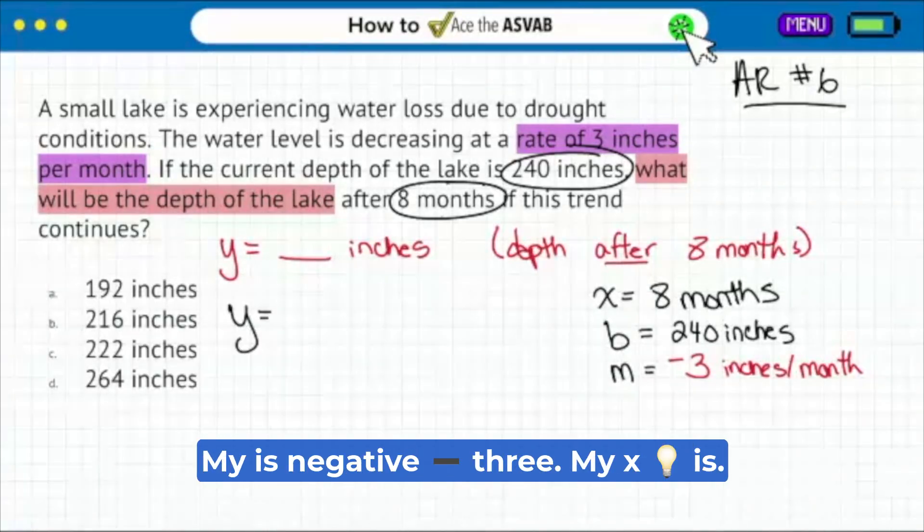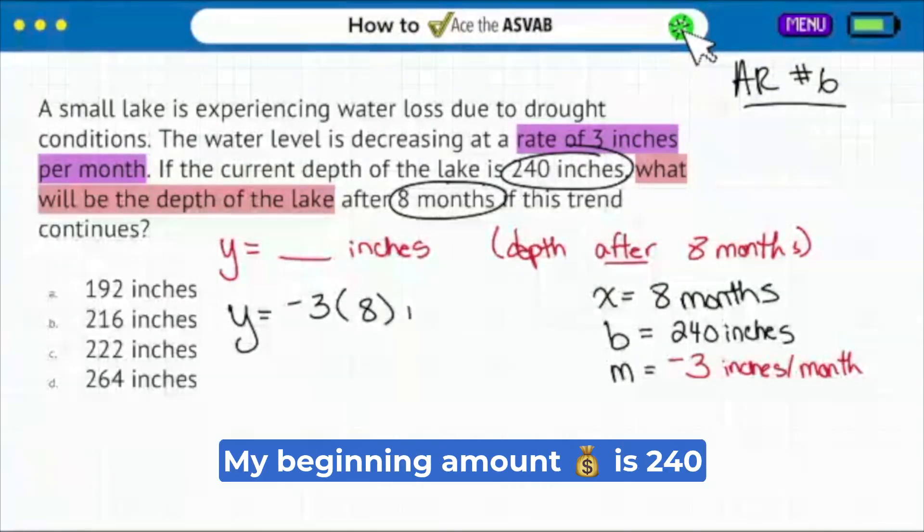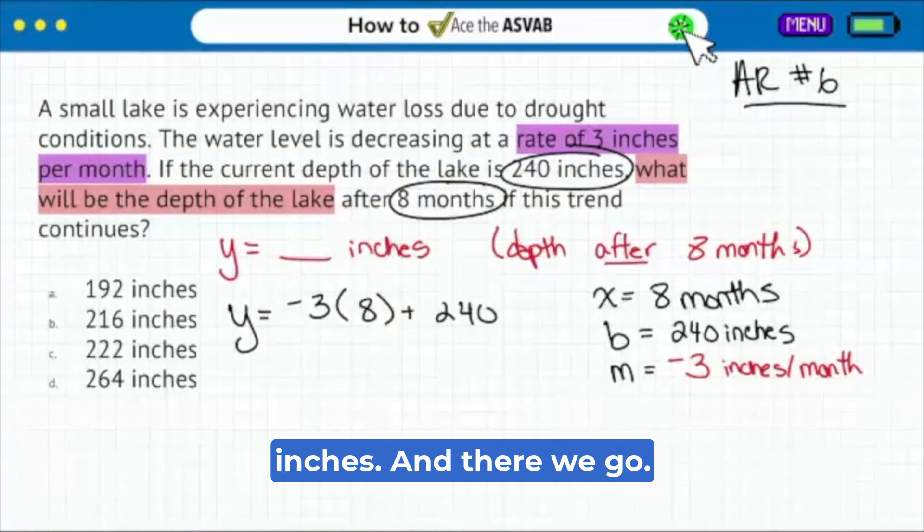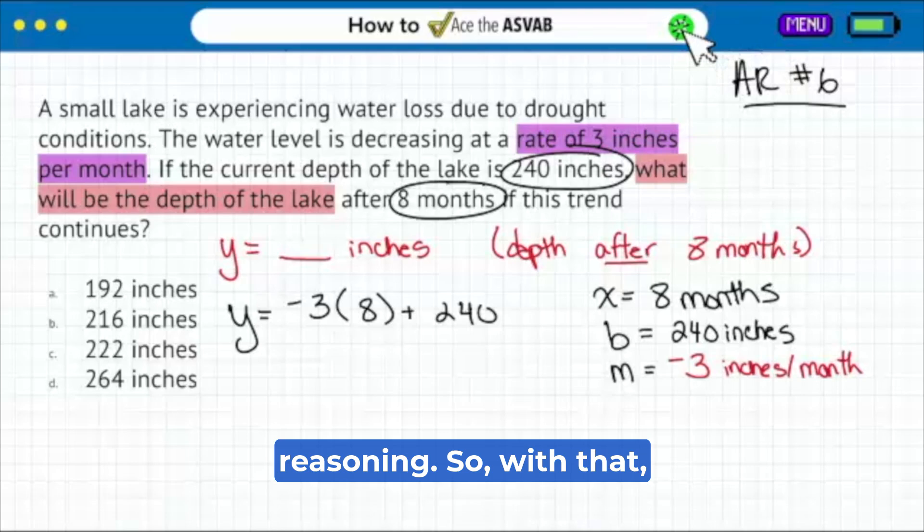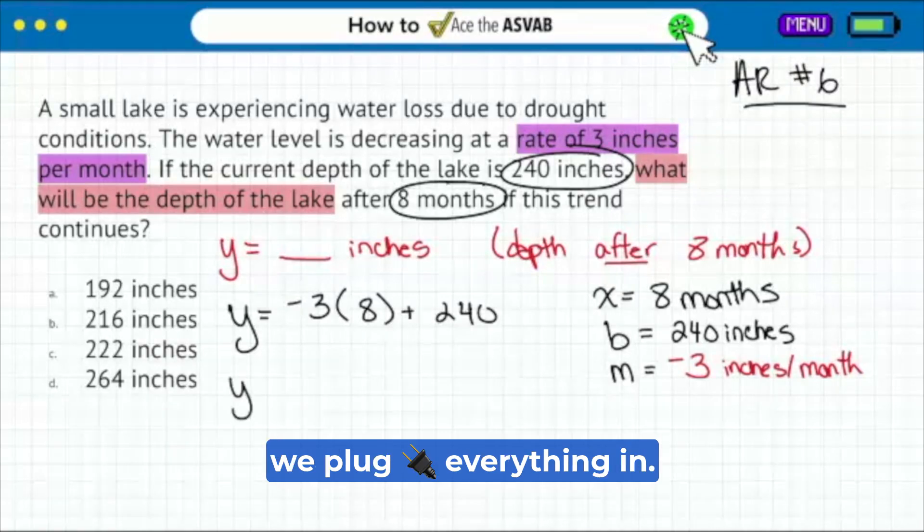y equals mx plus b. My m is negative three, my x is eight months, my beginning amount is 240 inches. And there we go. AR stands for arithmetic reasoning. So with that, we'll plug everything in.